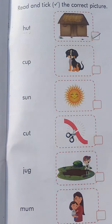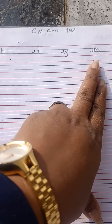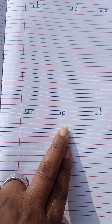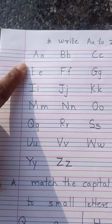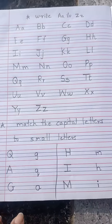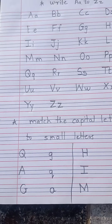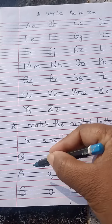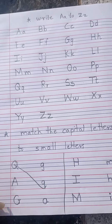Now take your English notebook. Today we are writing in the English notebook: the U sound words. And then we write A to Z — A, B, C, D — like this. And then match the capital letters to the small letters. This is your class work as well as homework.